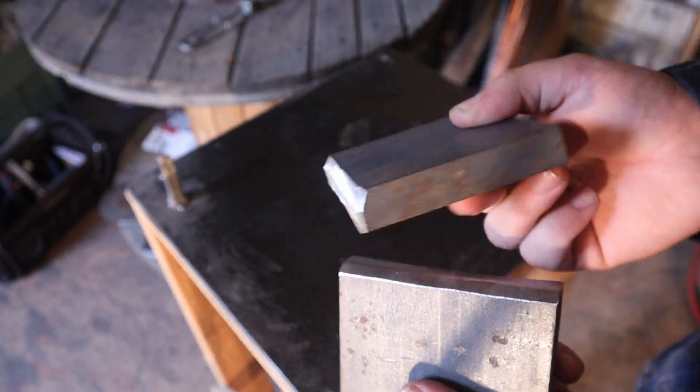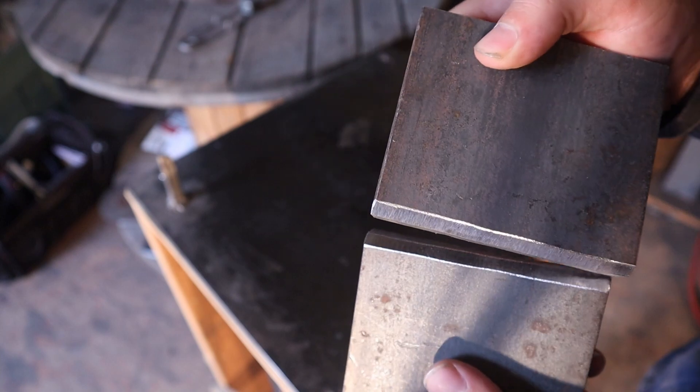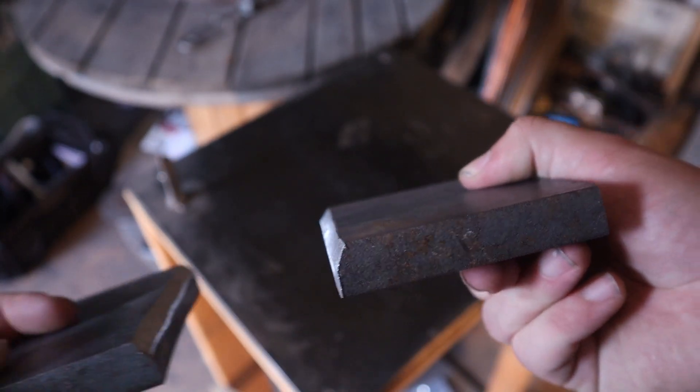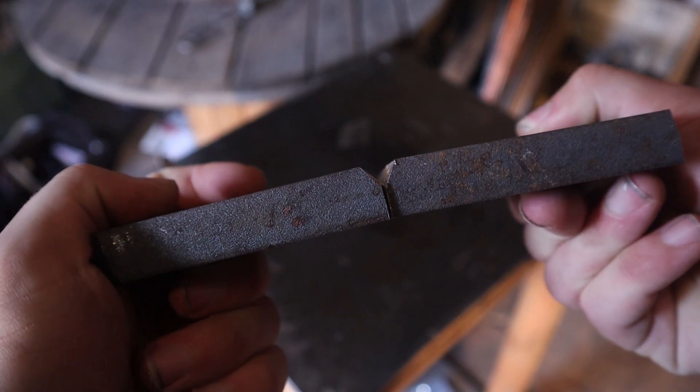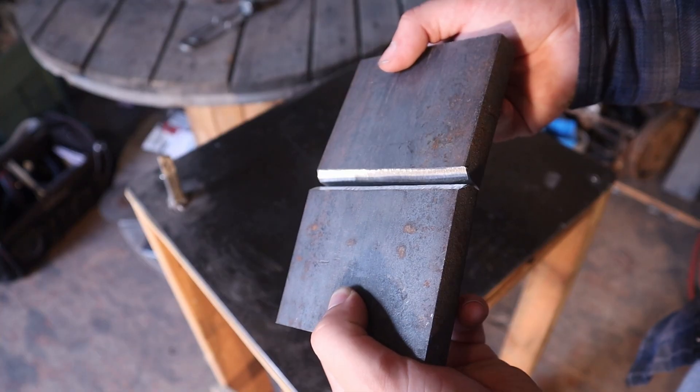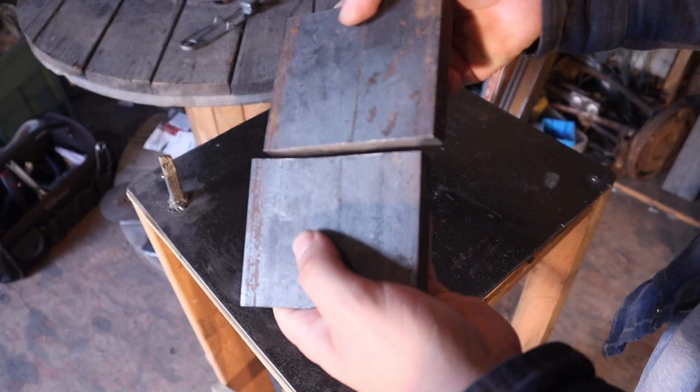I have two pieces of five-eighth inch steel with a groove ground into both pieces. I'm going to weld those together with a 7018 electrode, and then flip it over.